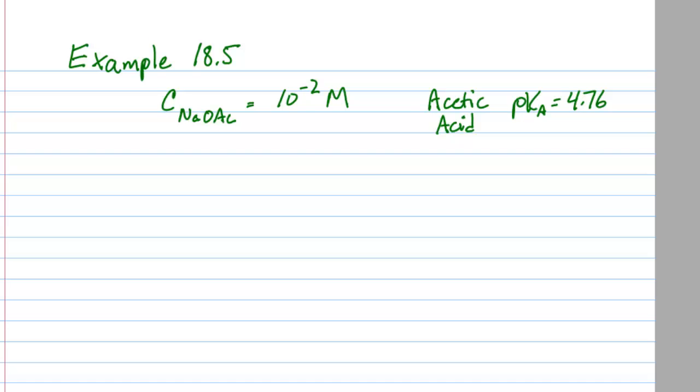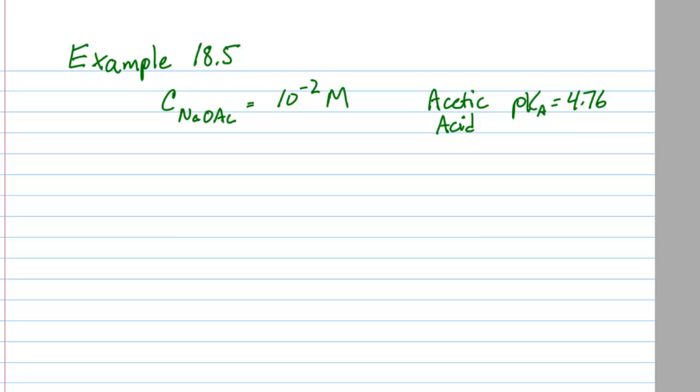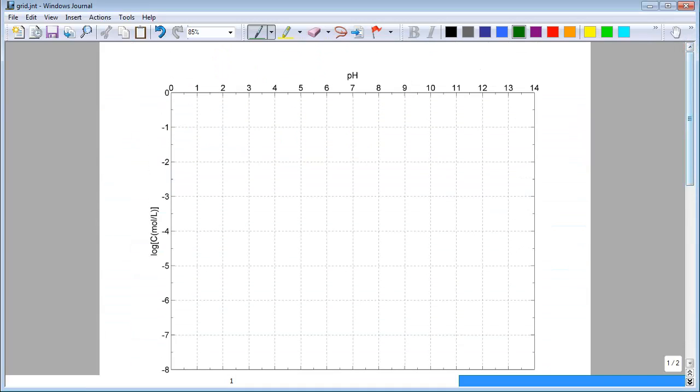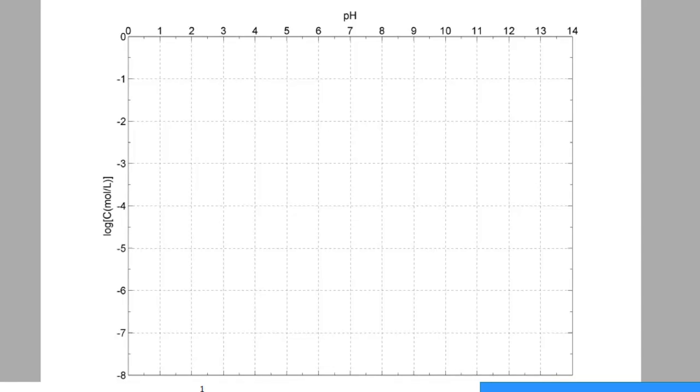My first step is to get the Sillén diagram ready. I need to draw in the lines for strong acid and strong base. So I've got my ruler out and I'm going to sketch the line for strong acid. I don't worry about the low curve down at low concentrations. I just put a straight line. And then I get the one for strong base. And I label them.